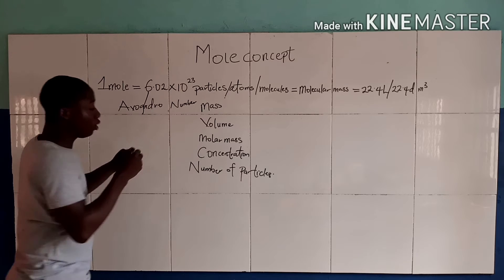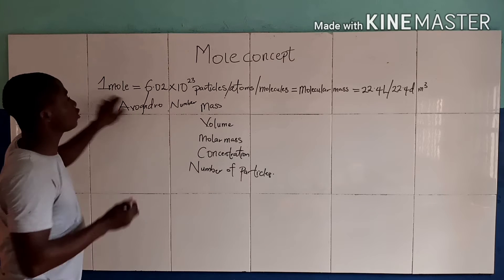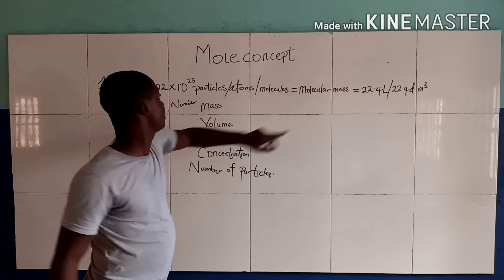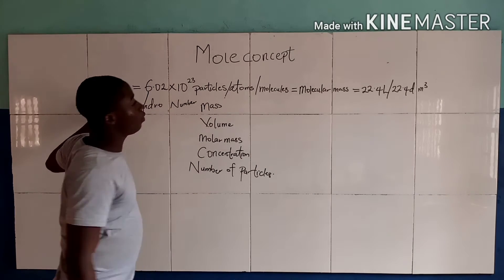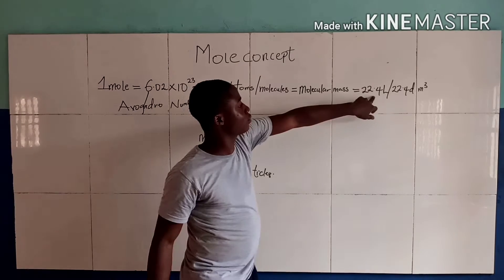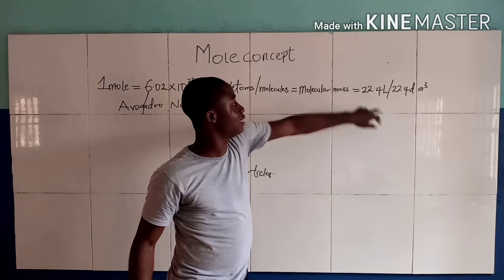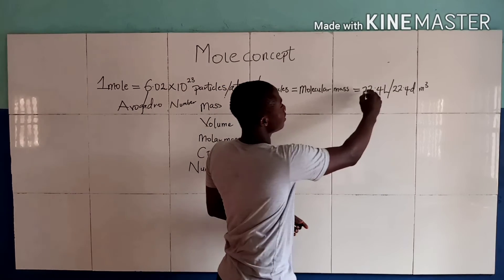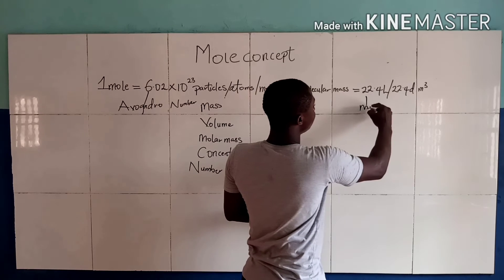One mole of a substance also equals its molar mass. Still, one mole of a substance equals 22.4 liters, and 22.4 liters is called the molar volume.